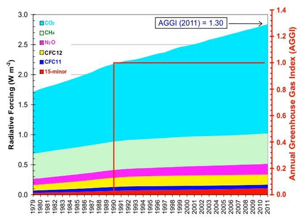The annual airborne fraction is the ratio of the atmospheric increase in a given year to that year's total emissions. As of 2006, the annual airborne fraction for CO2 was about 0.45, and increased at a rate of 0.25 ± 0.21% per year over the period 1959–2006.